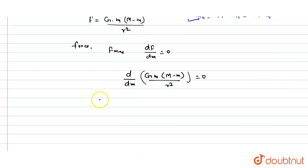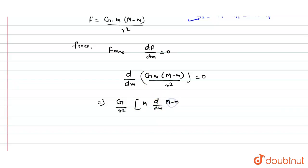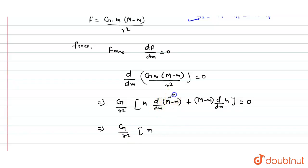Now we differentiate with respect to m. G by R squared is a constant term, so it comes out of the differentiation. Using the product rule: G by R squared times the quantity m times d/dm of (M minus m) plus (M minus m) times d/dm of m, all set equal to zero. Since capital M is a constant, d/dm of (M minus m) equals minus one.